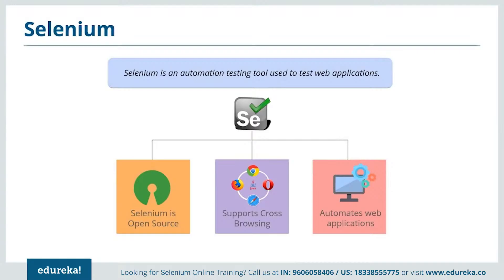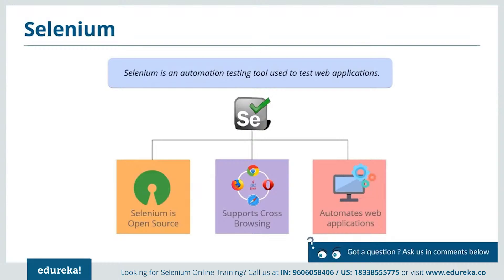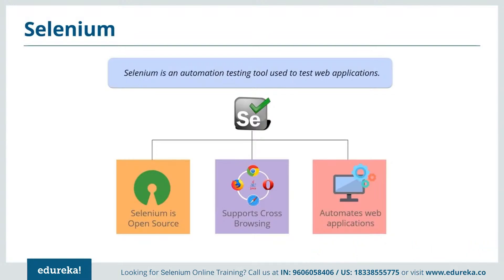Selenium is an open source portable framework used to automate test cases in a web application. It can be run on different browsers like Chrome, Safari, Opera, Explorer and supports cross-browser testing. Selenium supports different programming languages like Java, Python, Ruby, C#, etc., with Java being most commonly used. Selenium is free of cost — the user does not have to pay for any version. The latest version available is Selenium 3.1.